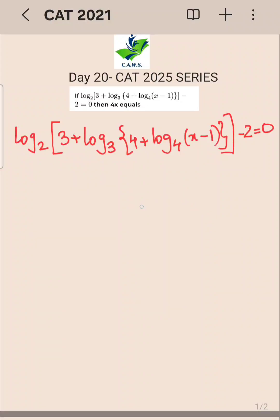This is a CAT 2021 question, it's a logarithm question. The question is 4x equals how much. Now the first thing you're going to do is keep this logarithm part as it is, we'll take minus 2 on the other side. This 2 will go on the other side so the value becomes 2 squared.